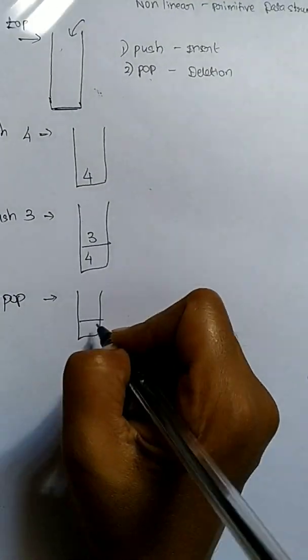Now we can see the applications of stack from a computer perspective. The computer applications of stack include: the first one is function calls. Suppose from void main, I am calling a function called add. From add, I call the function input.